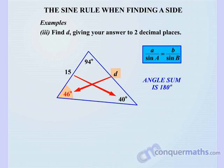Now we can get to business. d matches up with the 46 degrees, so we write d over sine 46 degrees. The 15 matches up with the 40 degrees, so it equals 15 over sine 40 degrees.